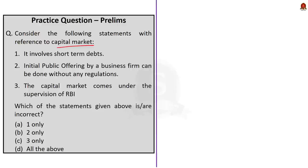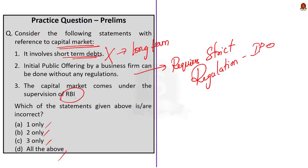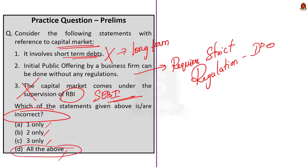The last question is about our capital market discussion — a three-statement question where you cannot use elimination since options are one only, two only, three only, and all the above. First statement: it involves short-term dips — incorrect. Second statement: initial public offering by a business firm can be done without any regulations — incorrect, it requires strict regulations. Third statement: the capital market comes under the supervision of RBA — absolutely incorrect, it comes under the supervision of SEBI, the Securities and Exchange Board of India. The question demands incorrect statements, and all three are incorrect, so the answer is option D: all of the above are incorrect statements.